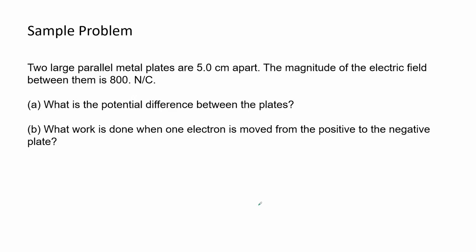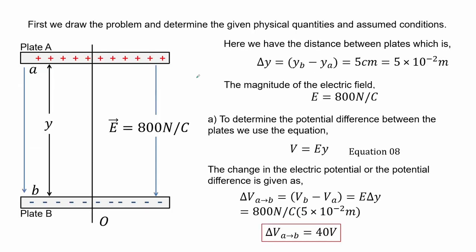Here we have a sample problem. Two large parallel metal plates are 5 centimeters apart. The magnitude of the electric field between them is 800 newtons per coulomb. Part A: what is the potential difference between the plates? Part B: what work is done when one electron is moved from the positive to the negative plate? First we draw the problem and determine the given physical quantities. The distance between plates is the change in Y, which is Y_B minus Y, and we also have the magnitude of the electric field.